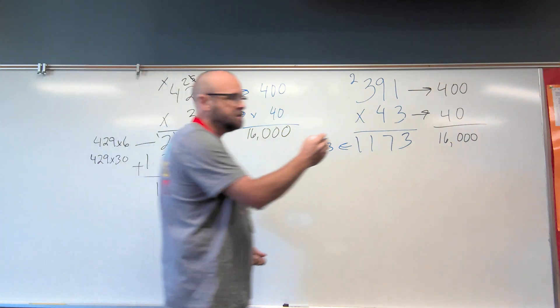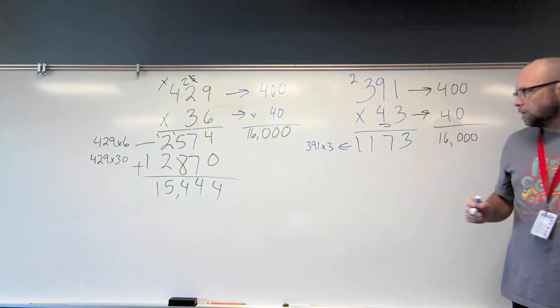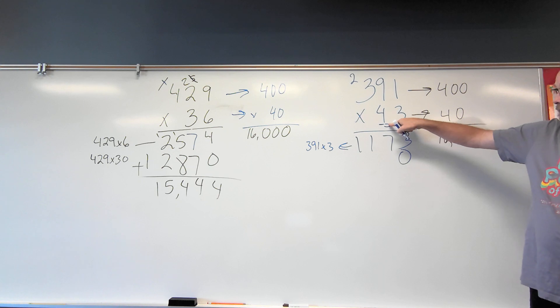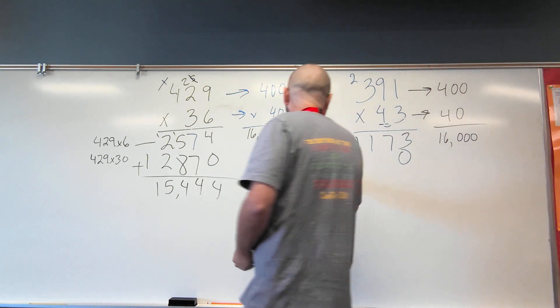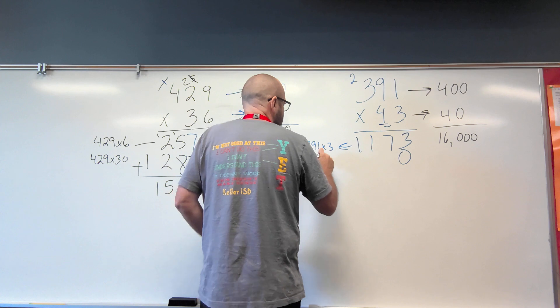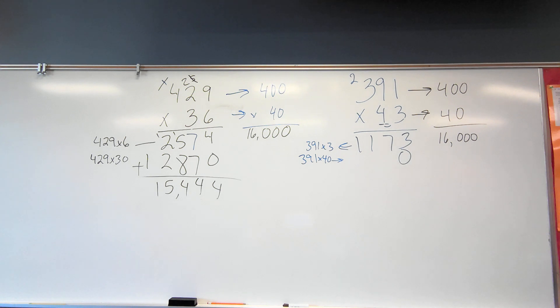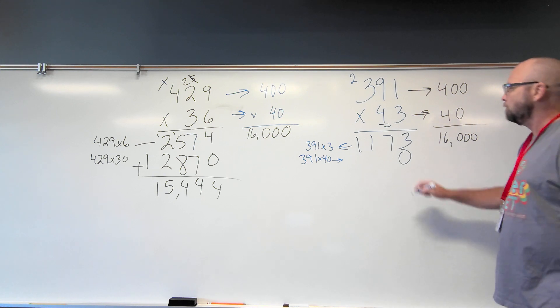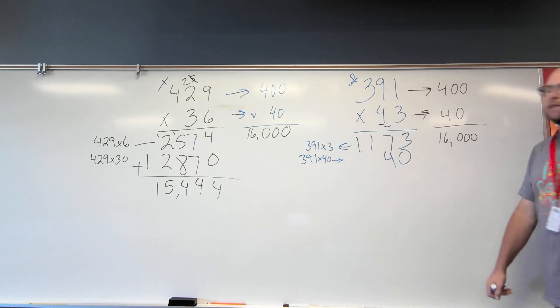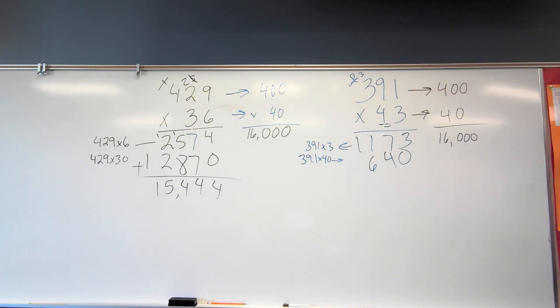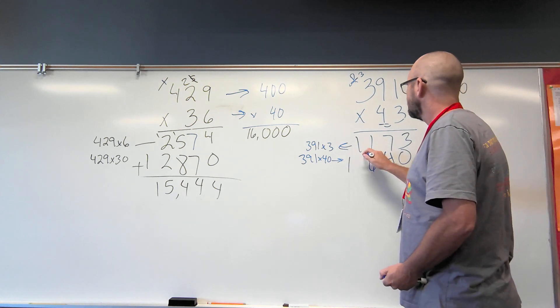Now my four is in the tens place. So this is actually 391 times 40 is what I'm actually doing here. So I got to start in my tens place. And I know my fours. Four times one is? No, he didn't. Four times nine is? Thirty-six. Four times three is? Twelve. Plus three? Fifteen. Fifteen is fine.